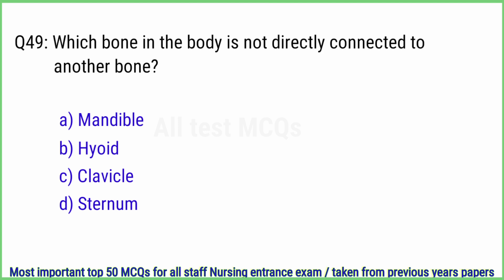Q49. Which bone in the body is not directly connected to another bone? The right answer is option B, hyoid.